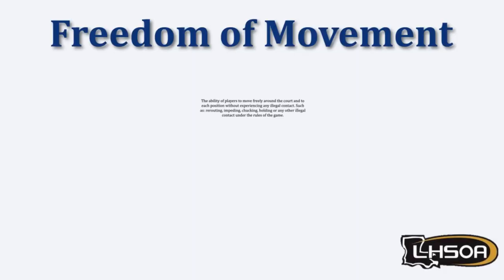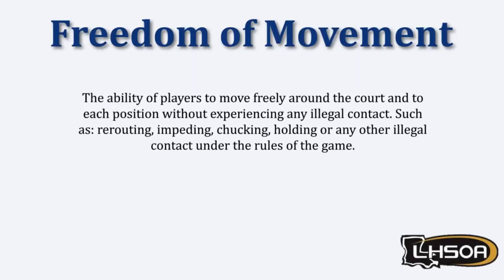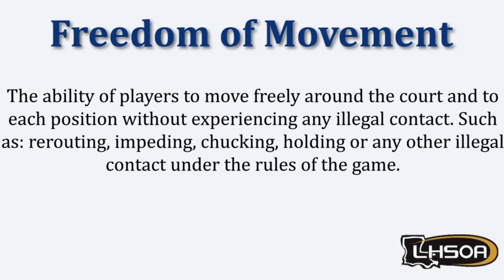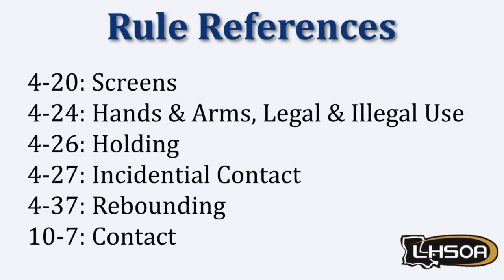Next we will discuss freedom of movement. Freedom of movement is just what it says — a player has the ability to move freely around the court and to each position without experiencing illegal contact. Players will make contact with other players, so as officials we have to judge plays, players' movements, and contact to deem it either incidental, marginal, or illegal, and determine if the player who initiates the contact gains an advantage or creates a disadvantage.